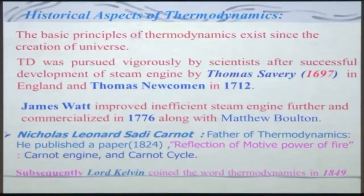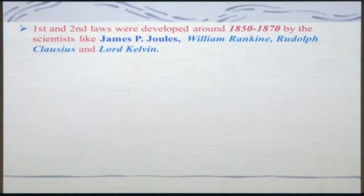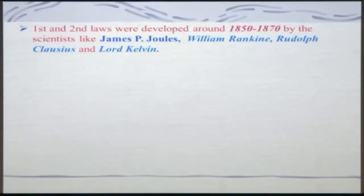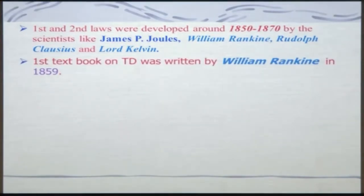Carnot really showed how it can be done. If you look at the first law and second law, which were developed around 1850 to 1870 by scientists like James Joule and William Rankine — you might know the Rankine cycle — and Rudolf Clausius and Lord Kelvin were instrumental in developing the second law of thermodynamics. Lord Kelvin coined the word 'thermodynamics' in 1849. The first textbook on thermodynamics was written by William Rankine in 1859, so that people could study it in universities and new generations could contribute to the development of thermodynamics.